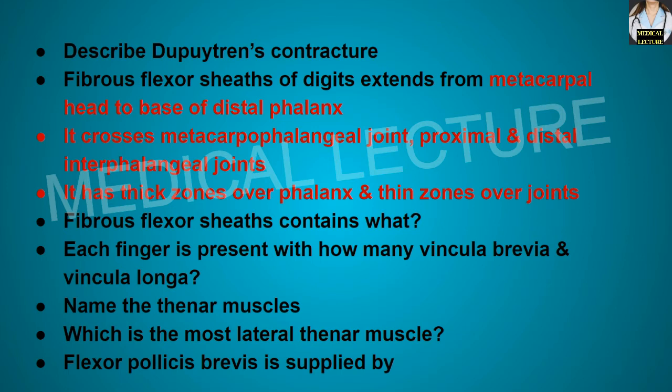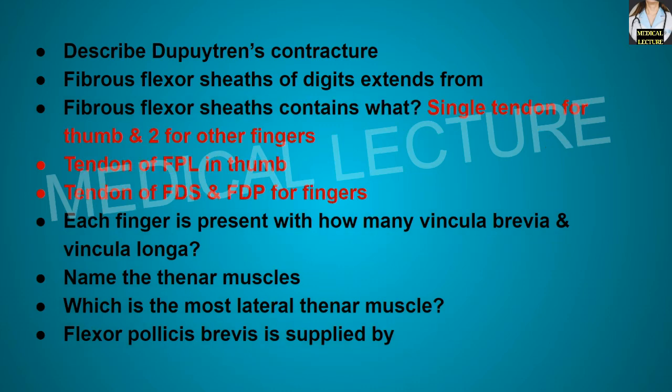What does the fibrous flexor sheath contain? It contains a single tendon for the thumb — the flexor pollicis longus — and two for other fingers — the flexor digitorum superficialis and flexor digitorum profundus. So single tendon FPL for the thumb and two tendons FDS and FDP for the fingers. Each finger also has vincula brevia and vincula longa.